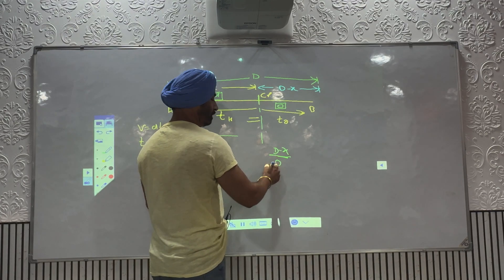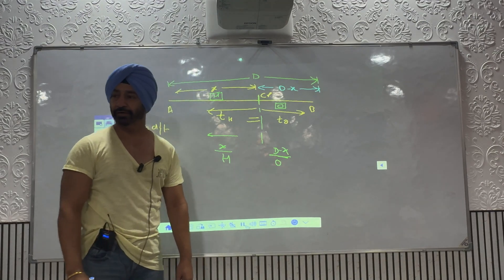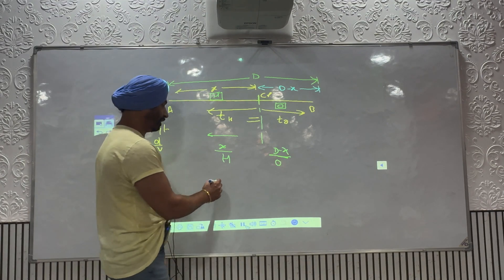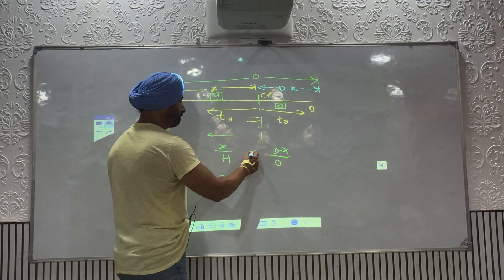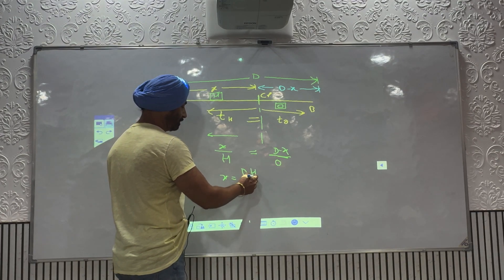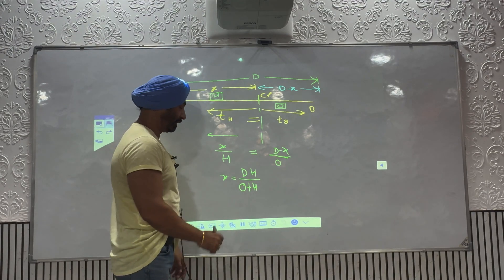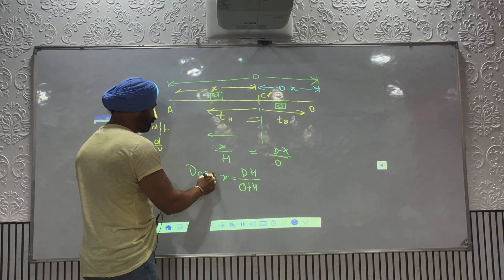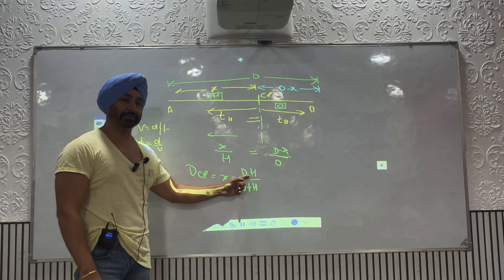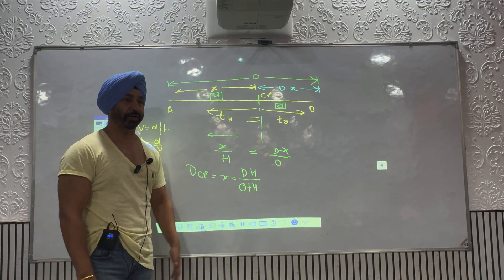If you decide to go to destination, it is outbound speed, and both times are equal. Cross-multiplying gives you X equals D times H divided by O plus H. This X is your distance to CP. D is your total distance, H is speed homebound, O is speed outbound — obviously both with one engine failed.